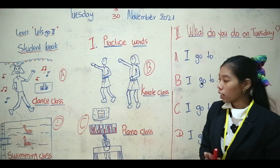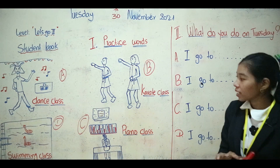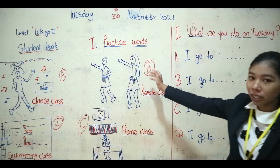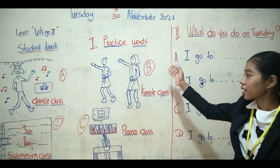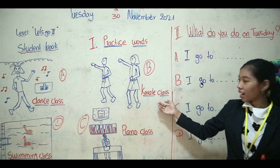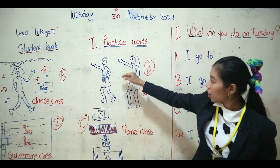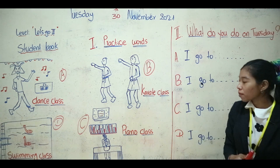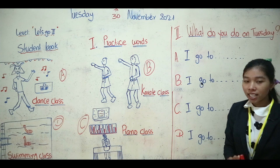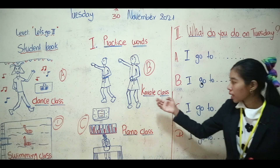Now move to picture B. Everyone, can you guess what it is? In this picture we call it karate class. You can see it looks like a strong girl. So this one we call karate class. We can spell it: K-A-R-A-T-E, karate, and C-L-A-S-S, class — karate class!